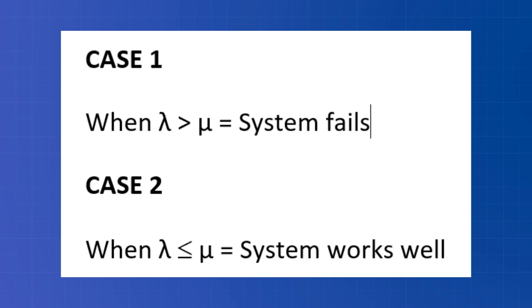In short, for a good working system, the arrival rate must be less than the service rate.